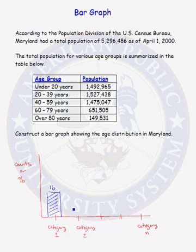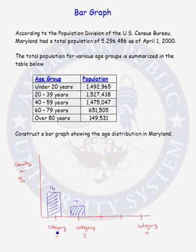For category 2, the rectangular box is of the same width as that used in category 1. Again, we shade, and in this category we had seven items. So above each category is a rectangle centered over the label for the category, and at the top you either put the count or the percent corresponding to that category. So let's do that for our data.